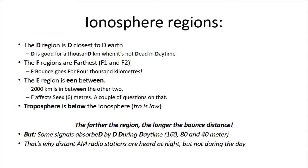Some more about those ionospheric regions: D is closest to the Earth — remember D, or think '1,000 kilometers when it's not dead in daytime.' F regions — F for farthest — F1 and F2. An F bounce can go 4,000 kilometers. Remember the letter F: farthest, F1, F2, 4,000-kilometer bounces. And E is in between — its bounce distance falls between the other two.